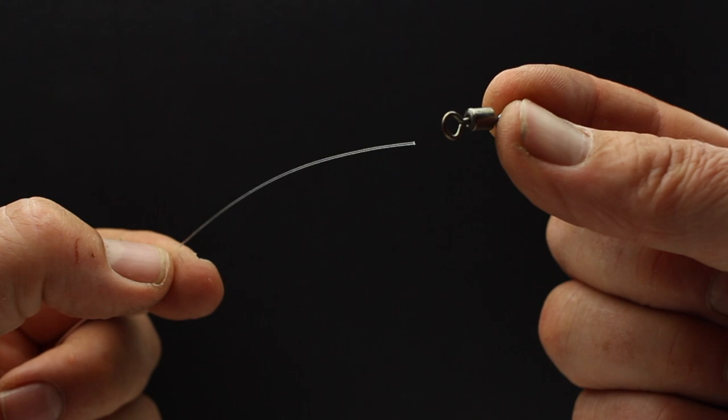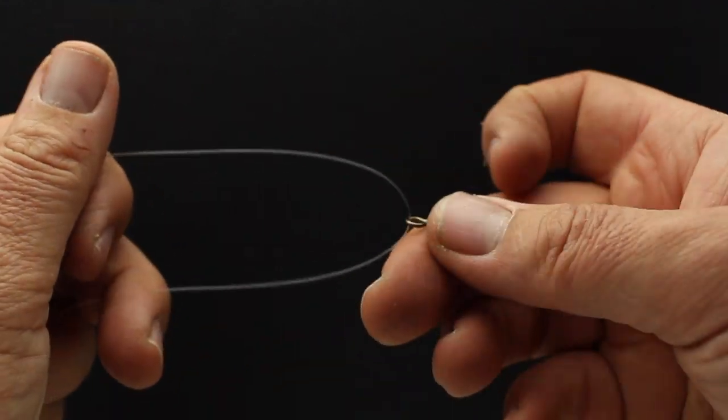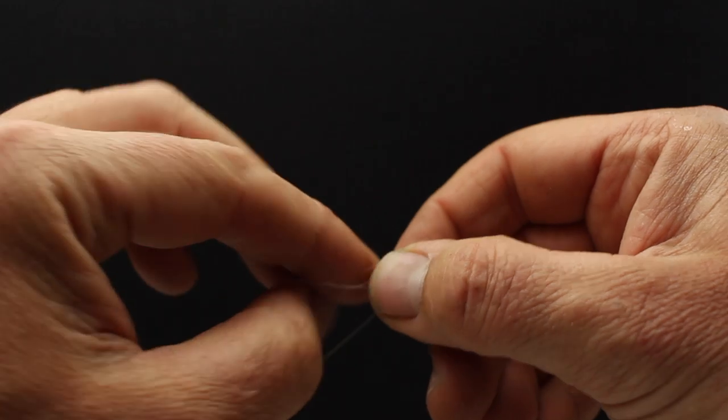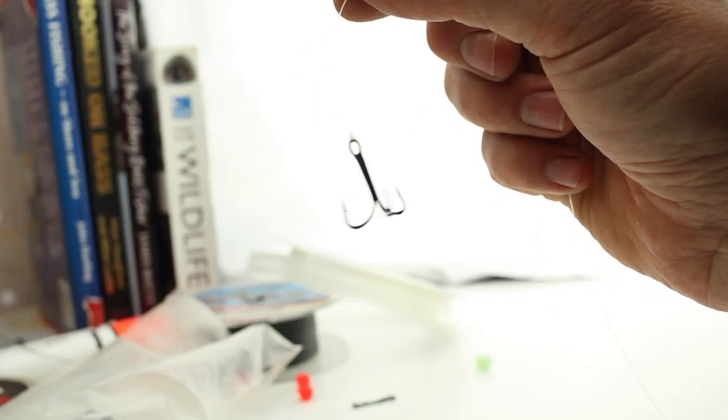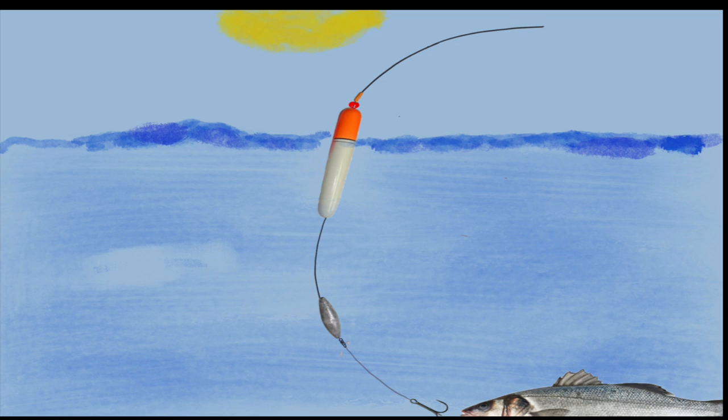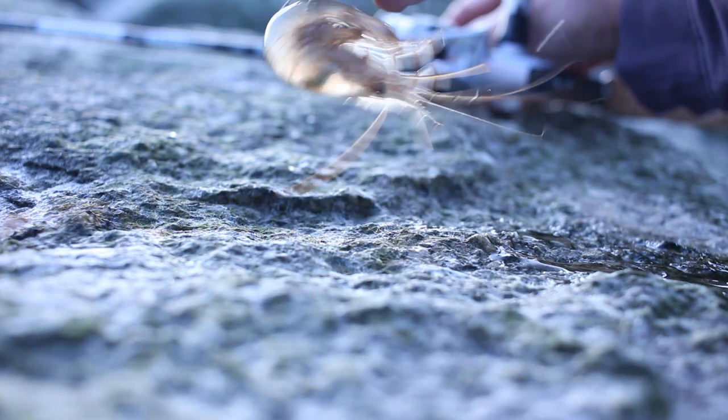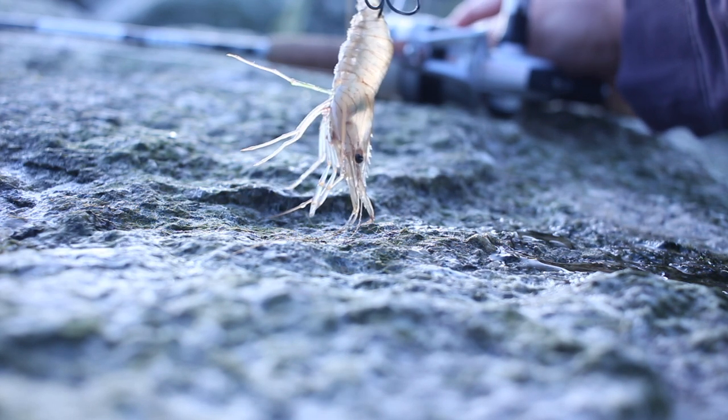And then just make up loads of snoods ready to clip on the end of the rig. You will need a swivel on one end, of course, to stop the line twisting. And that's it, you're ready to go. There are lots of different ways of rigging a float, of course. This is just one way that I found pretty basic and has been effective.